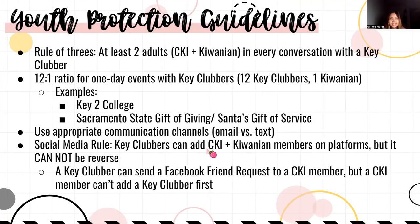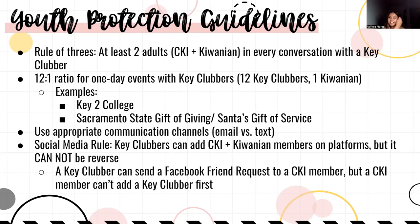The Rule of Threes: at least two adults — a Circle K member and a Kiwanian — in conversation with a Key Clubber. Always keep the 12-to-1 ratio for one-day events with Key Clubbers — 12 Key Clubbers to one Kiwanian — for example, Key to College or Sacramento State's Gift of Service. Use appropriate communication channels: emails versus text. We are in a professional setting, so use emails and avoid slang. When emailing, you must always have a Kiwanian CC'd.